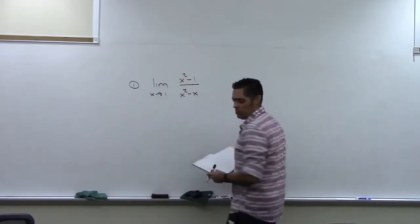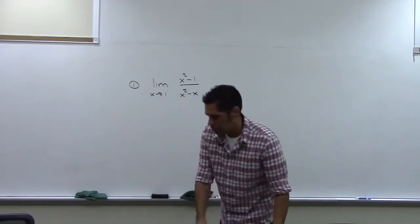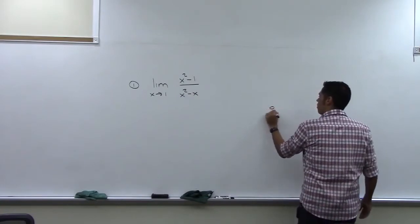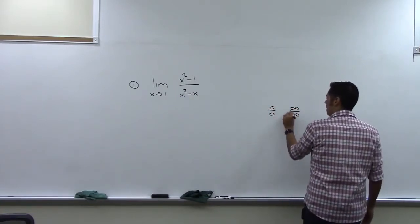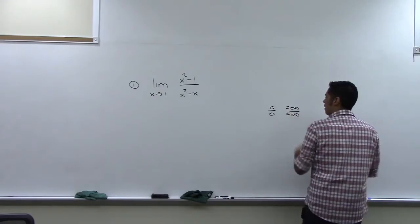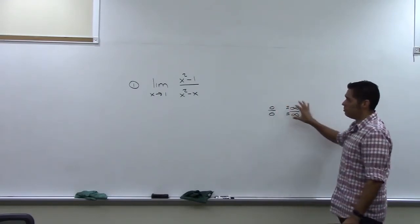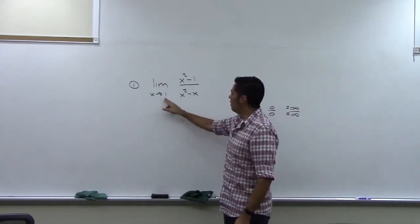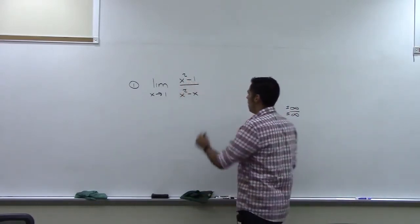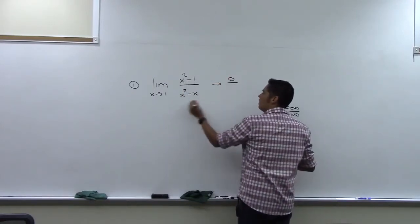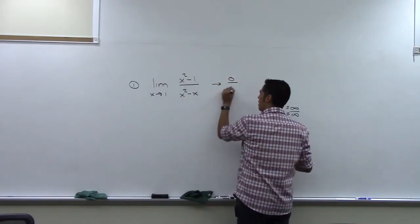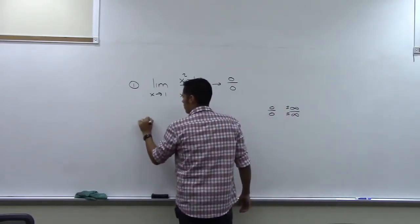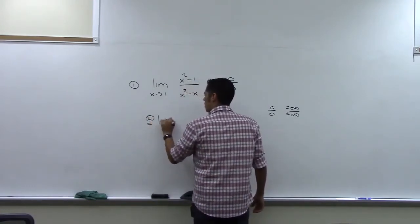What we need to do when using L'Hôpital's rule is to make sure that when we apply the limit, we have either zero over zero or infinity over infinity — it doesn't matter if it's plus or minus on top or bottom. If I let x go to one, the top is x² minus one, which goes to zero, and the bottom is x minus one, which also goes to zero. So we do have what we need for L'Hôpital's rule.